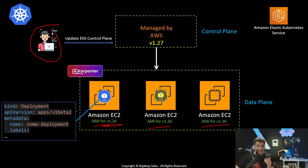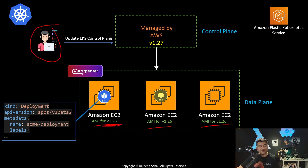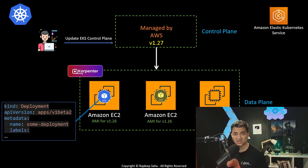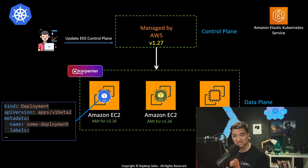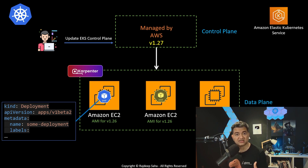The newest-generation cluster autoscaler, Karpenter, helps you automatically update the AMI. This works not only for version-to-version upgrades — even if you're on version 1.26 and AWS releases a new AMI for that same version with security patches, Karpenter can keep them up to date automatically. Karpenter is a CNCF project and is getting very popular. Check out my free tutorial linked in the video to learn more about it.